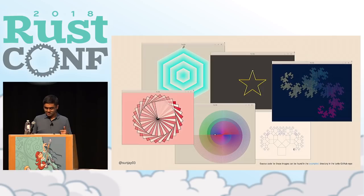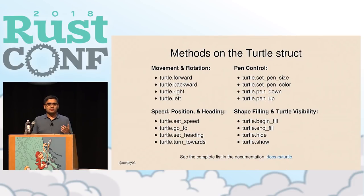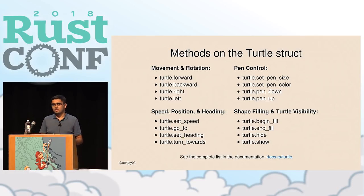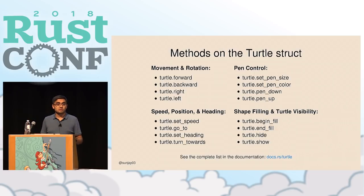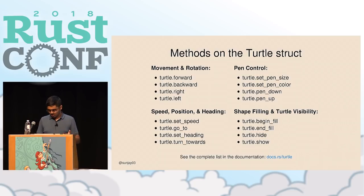You can draw all kinds of amazing things just by telling the turtle where to go. All of these drawings were drawn in Turtle, and some were contributed by people in the Rust community. You can find the source code in the examples directory of the Turtle GitHub repository. The interface provided by Turtle is fairly simple without being limited in functionality — there are movement and rotation methods, methods for controlling walking speed, pen manipulation, shape filling, and turtle visibility. You get all these different ways to draw with a very simple mental model: it's just a turtle moving around the screen.